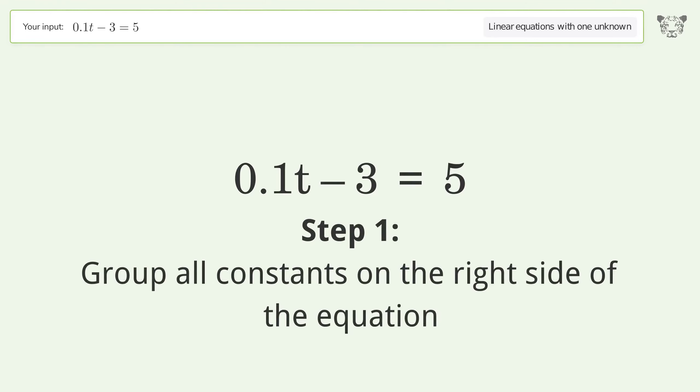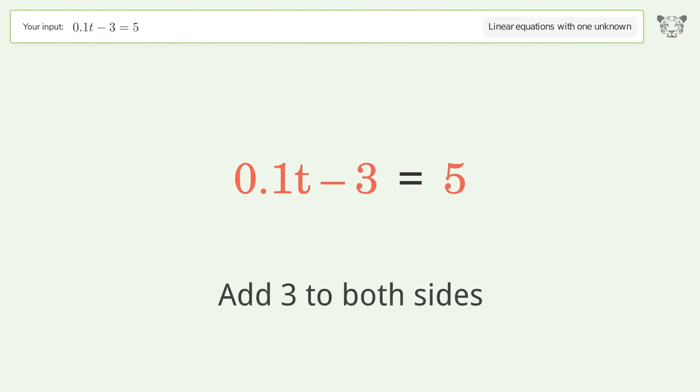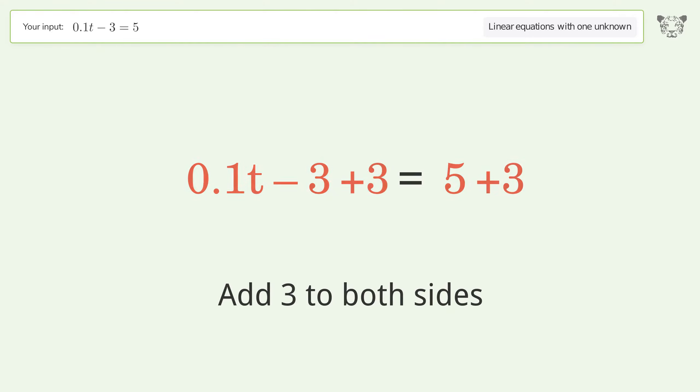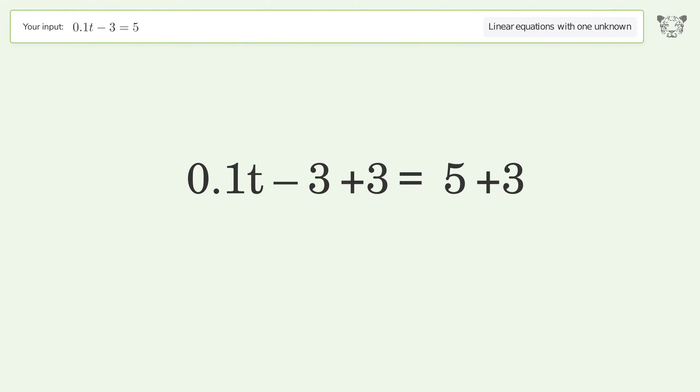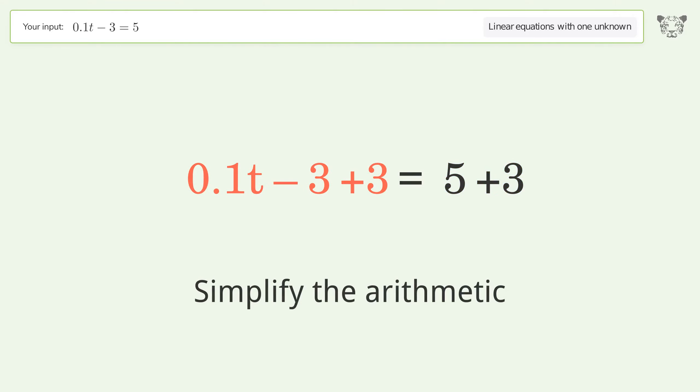Group all constants on the right side of the equation. Add 3 to both sides. Simplify the arithmetic.